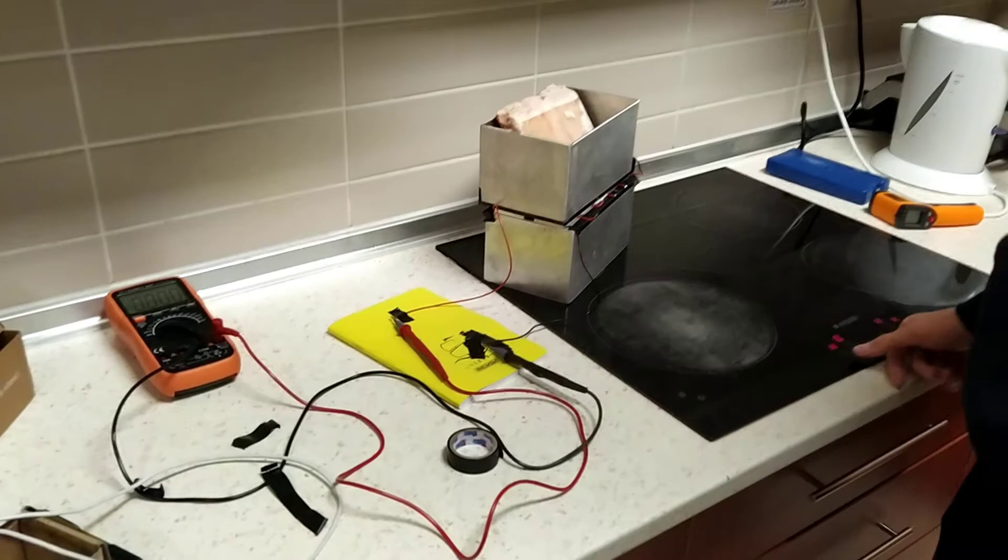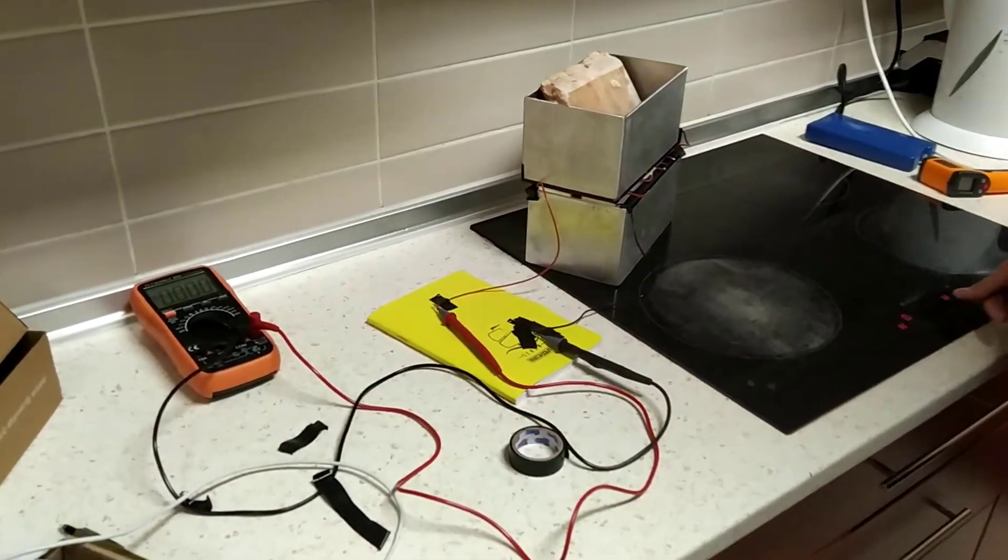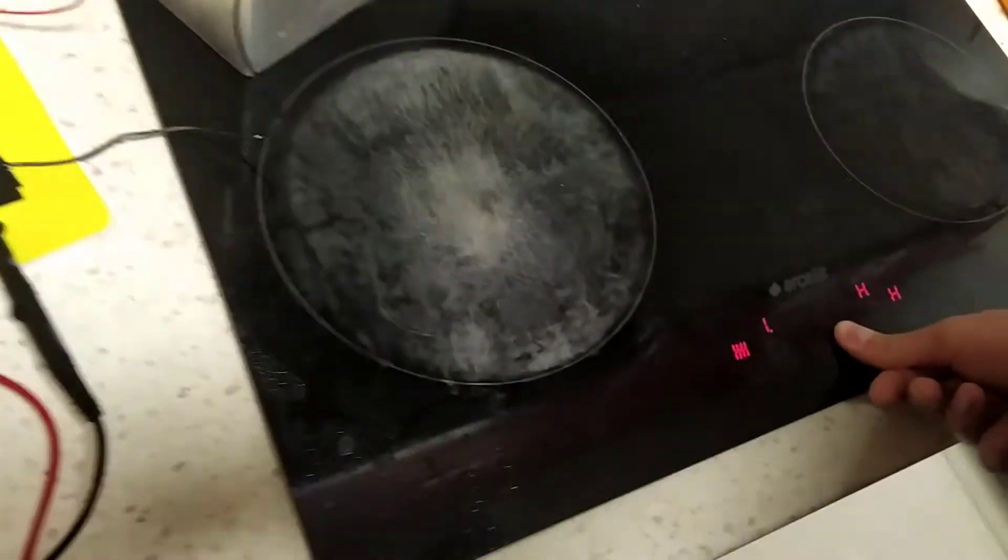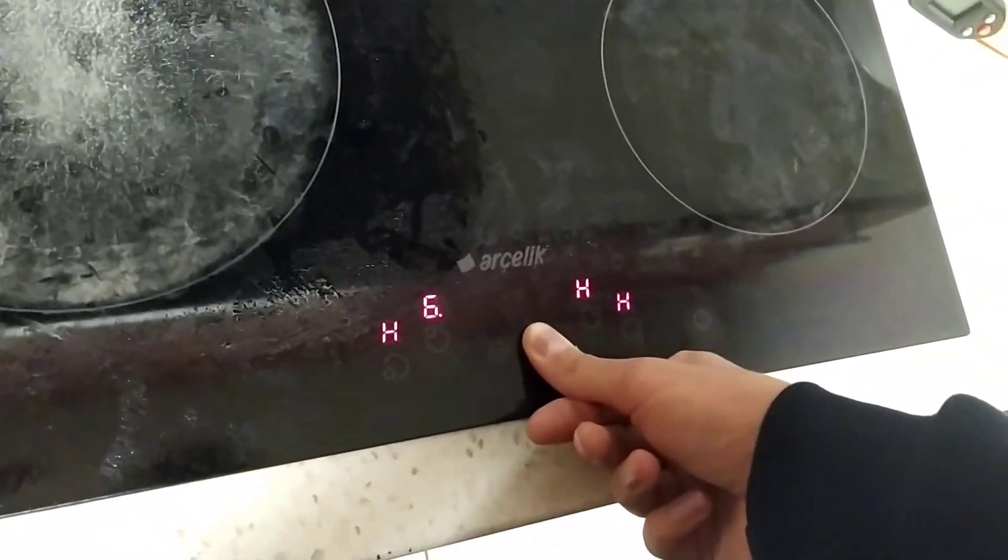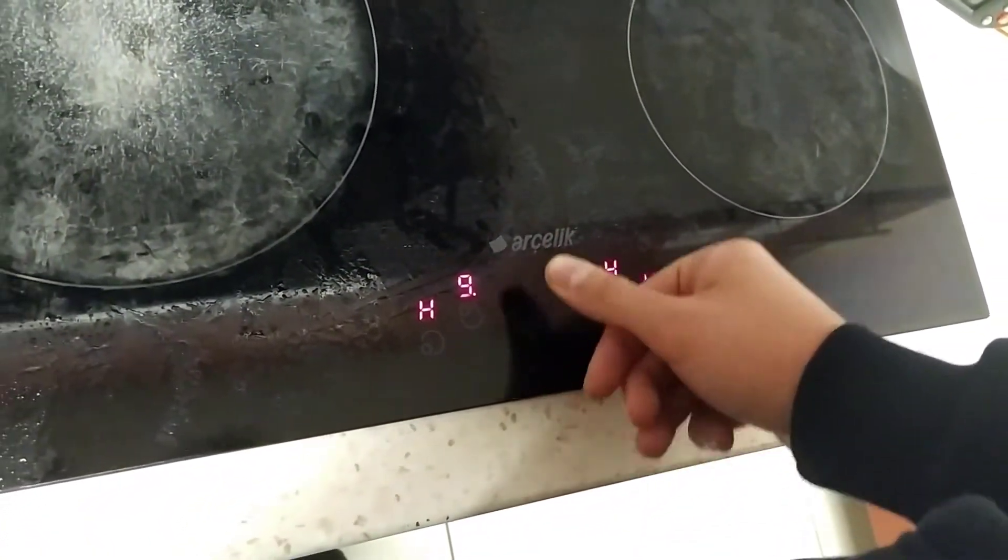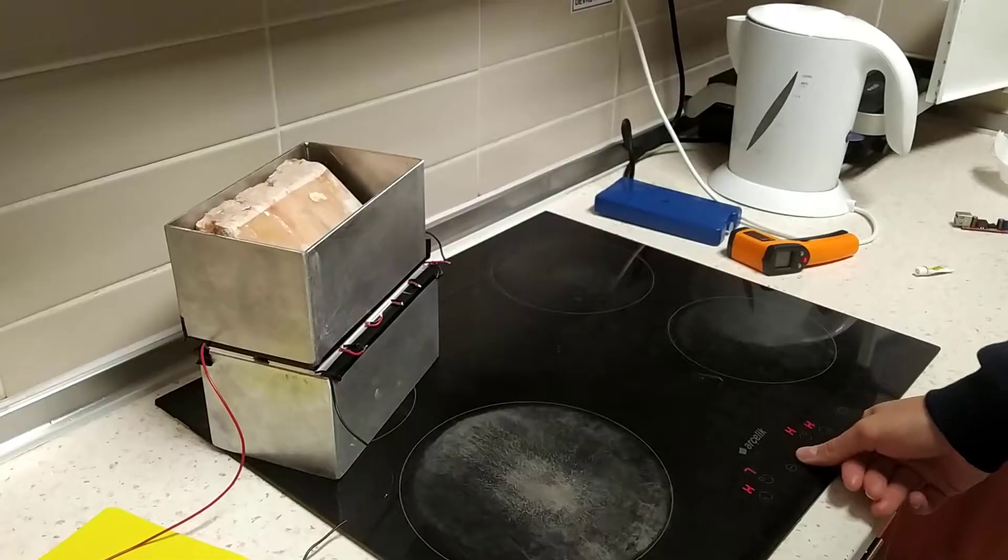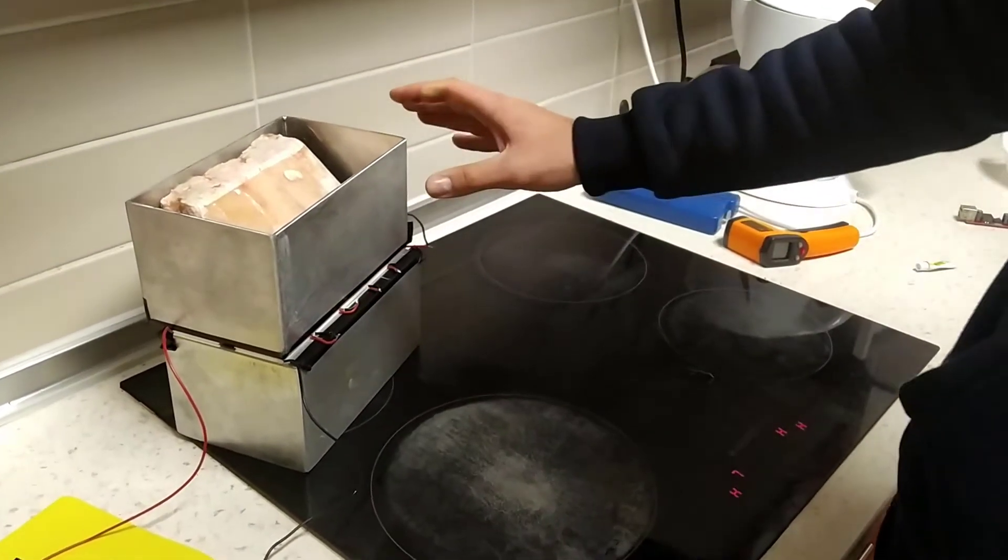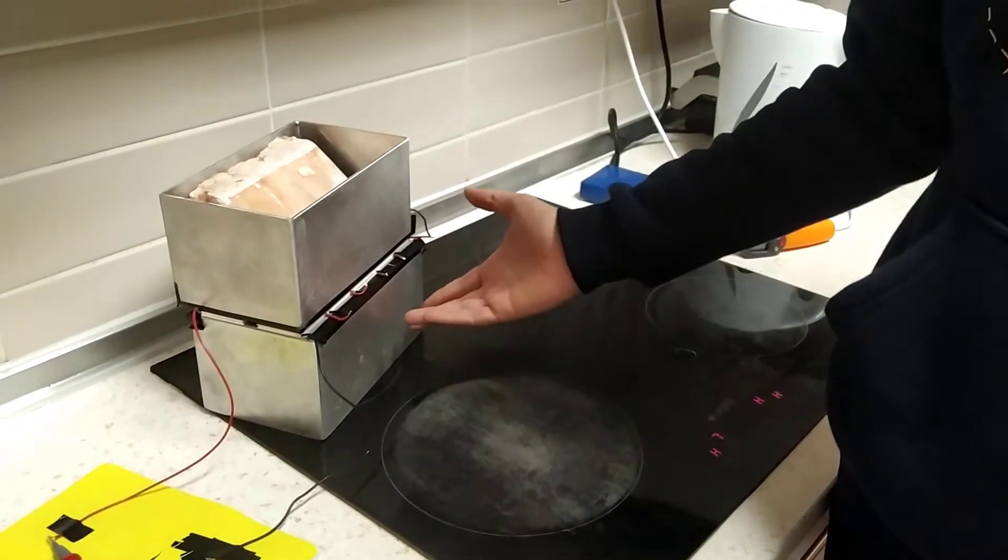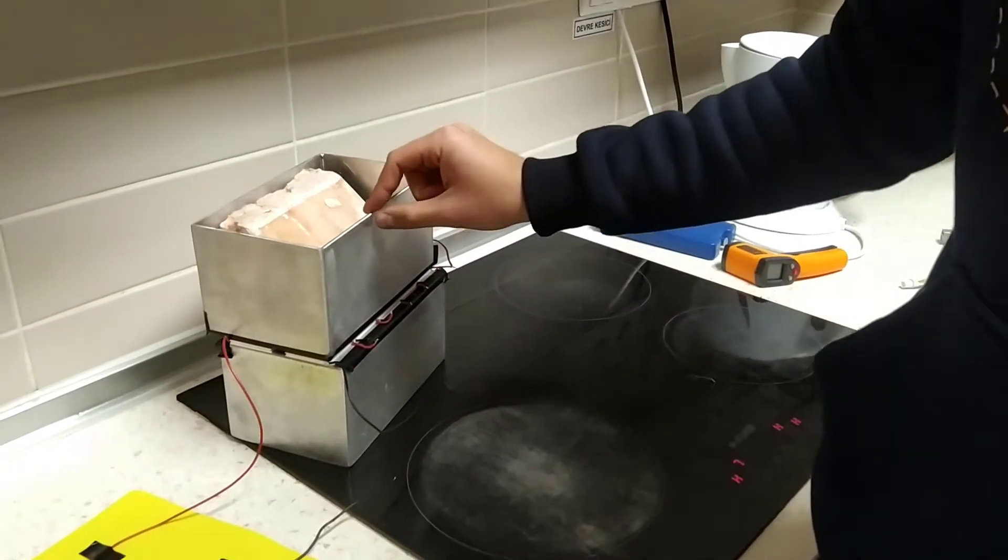To show you how our system works, we will light up our hypothetical grill. And so if you wait enough, you will see that this side gets hotter and this side gets cooler, and as a result, we get a voltage difference.